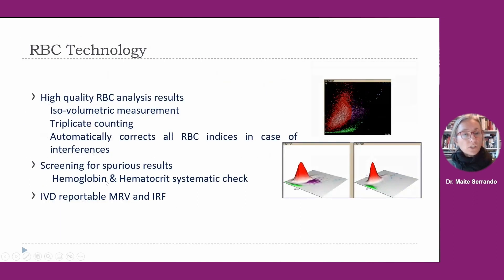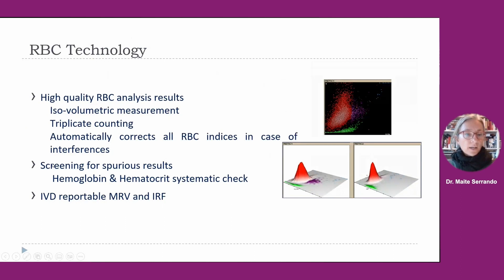For red blood cell technology, as a reminder, this is a high-quality channel for analysis results with isovolumetric measurement and triplicate counting, with automatic correction for all red blood cell indices, screening for spurious results such as hemoglobin and hematocrit systematic checks, and reportable IDD results for MRV and IRF in all cases.